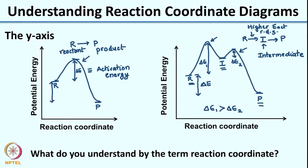Such a simple graph gives you a lot of information about the energetics of a reaction that was missing from the reaction mechanism notation alone. Looking at a reaction coordinate diagram, you get information about the energy of your reactant, product, what intermediates are present, and the relative energy of intermediates with respect to reactant and product. Now let us understand what exactly the term 'reaction coordinate' means. I would like you to press pause, look at these graphs carefully, and think about what the reaction coordinate actually signifies.